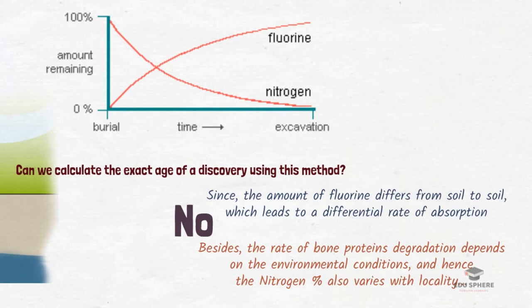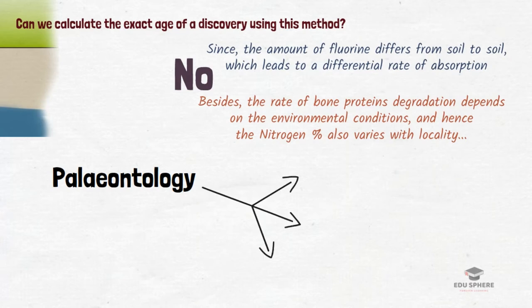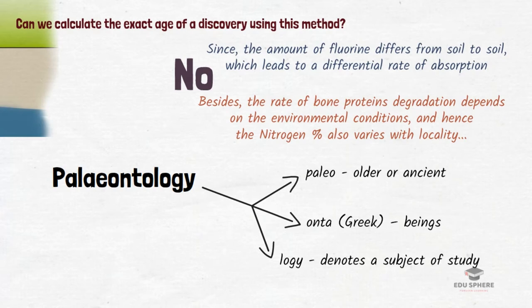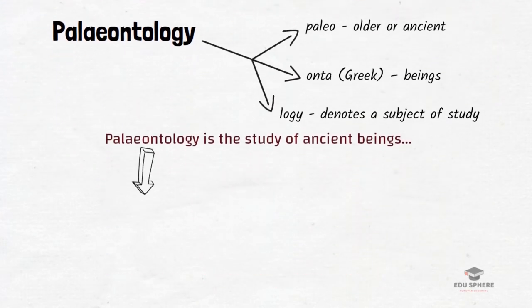Next in relative dating is paleontology. The word paleontology can be broken down into sub-components: 'paleo,' which means older or ancient, especially relating to the geological past; 'onta,' which in Greek means beings; and 'logi,' which denotes a subject of study. So paleontology is the study of ancient beings. Essentially, paleontologists study fossils to trace the evolution of life on earth.